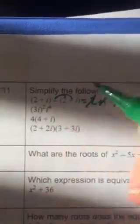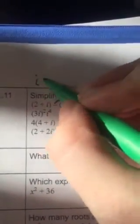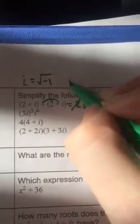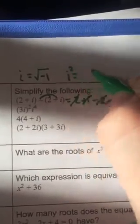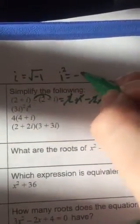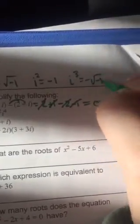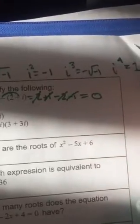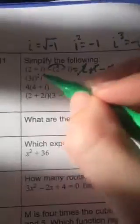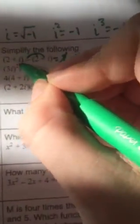i to the 4th, if you remember, i is the square root of negative 1. i squared equals negative 1. i cubed is negative i. i to the 4th is 1. So if I have i to the 4th, that's really just 1.